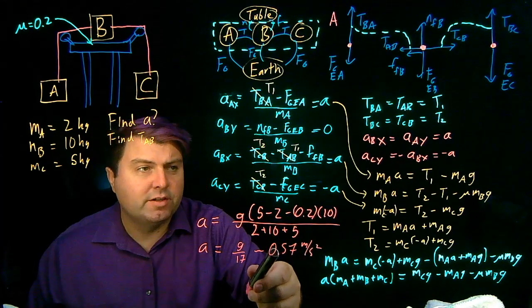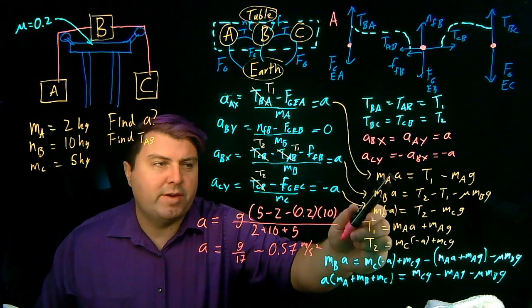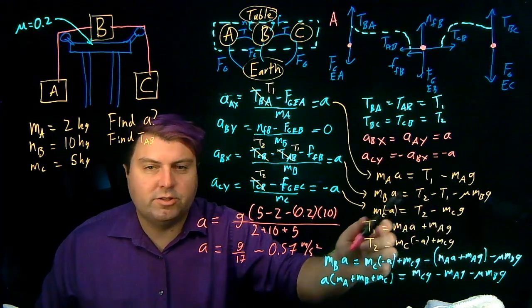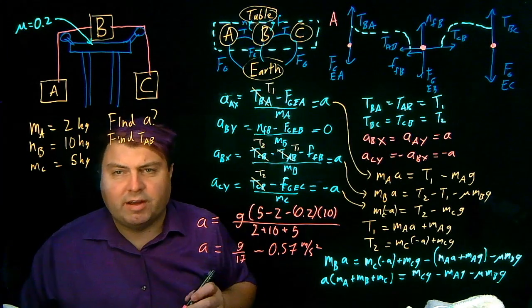Once we have this, then we can go back into here. Now we know MA, now we know A. We can find T1, we know MA, we know G. And we can go back and find T1 or T2 after we've found A.